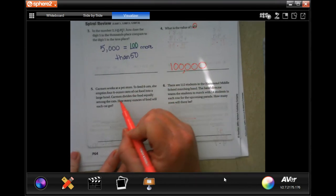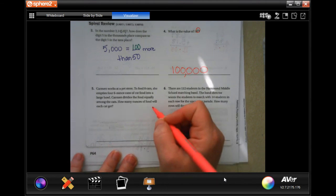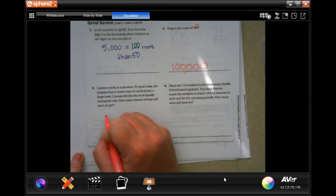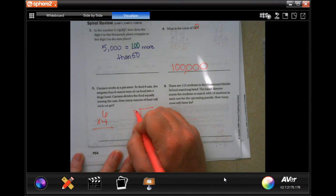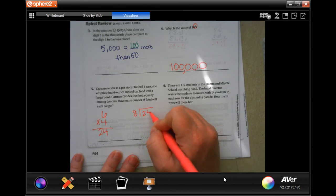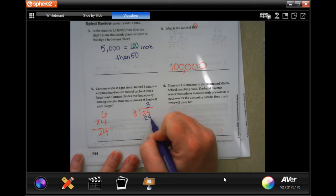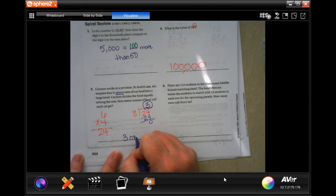Carmen works at a pet store to feed eight cats. She empties four, six-ounce cans of food into a large bowl. Carmen divides the food equally among the cats. How many ounces of food will each cat get? So six-ounce cans, and she does four of them. Then she divides that between eight cats. So six times four is 24. We're going to go ahead and put that 24 in the box. Well, eight goes into 24 three times, which is 24. Subtract gets zero. So three ounces.